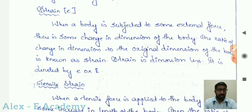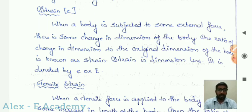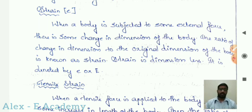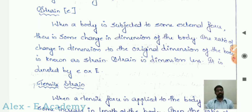Strain is denoted by E. When a body is subjected to some external force, there is some change in dimension of the object. The ratio of change in dimension to the original dimension of the body is known as strain. Strain is dimensionless. If a load is applied, there is some kind of deformation — in tension the dimension increases, in compression it reduces. Change in dimension divided by original dimension gives strain.